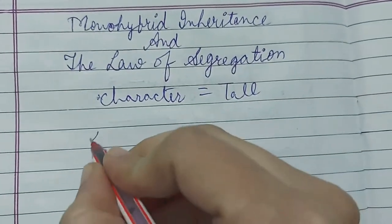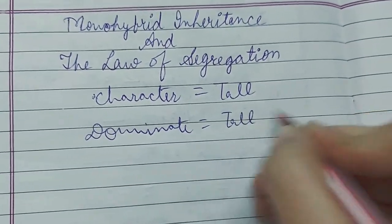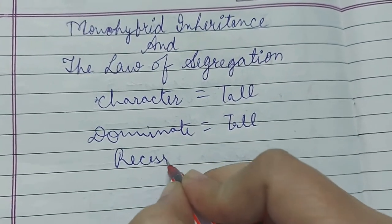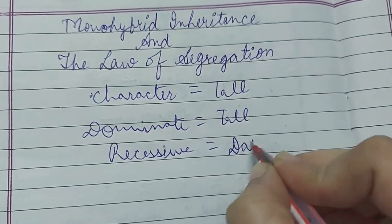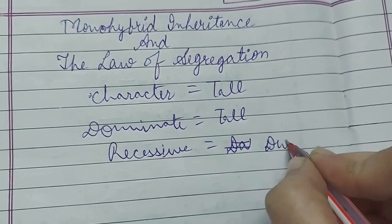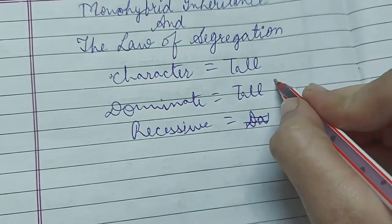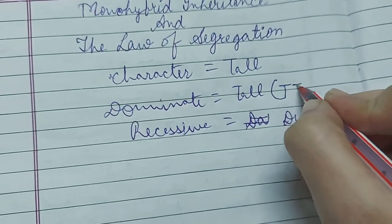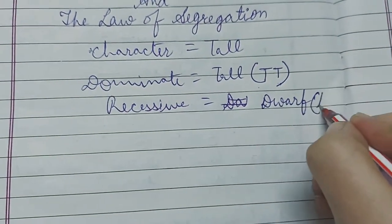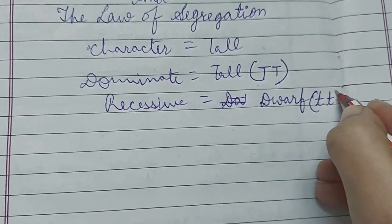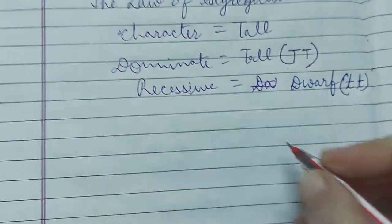Let's take a character — we will look at height. The dominant character is tall and the recessive character is dwarf. For dominant, we will use capital T and capital T to show our dominant character, and small t and small t to show our dwarf character.